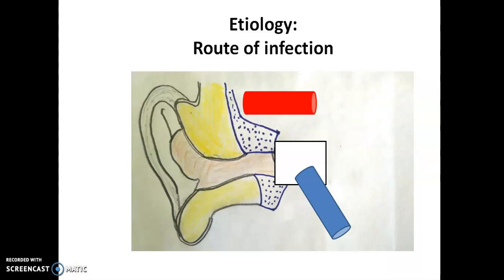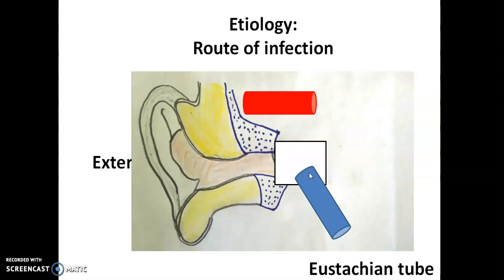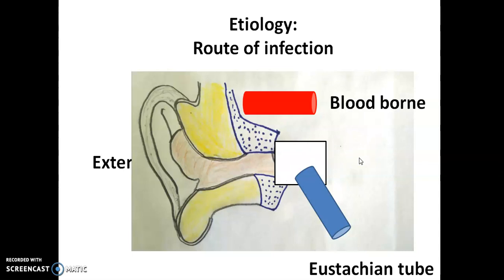The routes of infection — the etiology and causes for acute suppurative otitis media. Infection can come from various routes: from outside if there is traumatic damage to the tympanic membrane (from the external ear); from the pharynx through the eustachian tube, which is the most common route — when a person is yawning or taking a deep breath the tube ventilates the middle ear, and infection can also travel through that route. Lastly, when a person is in septicemia — bacteria running through the blood — it can reach the middle ear via the bloodstream. This is a blood-borne infection.